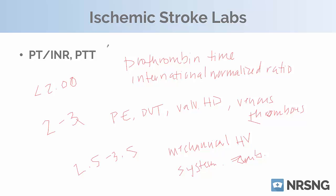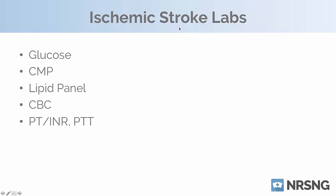The last lab is the PTT, also called the APTT — partial thromboplastin time or activated partial thromboplastin time. This measures bleeding time: a chemical is added to the patient's blood and we see how quickly it clots. Normal is 25 to 35 seconds. If we've got an increased bleeding time, we may be more concerned and potentially withhold TPA. These are the key labs we look at in depth for a stroke patient — while other labs might be ordered, these are the focal points for a patient presenting with an ischemic stroke.